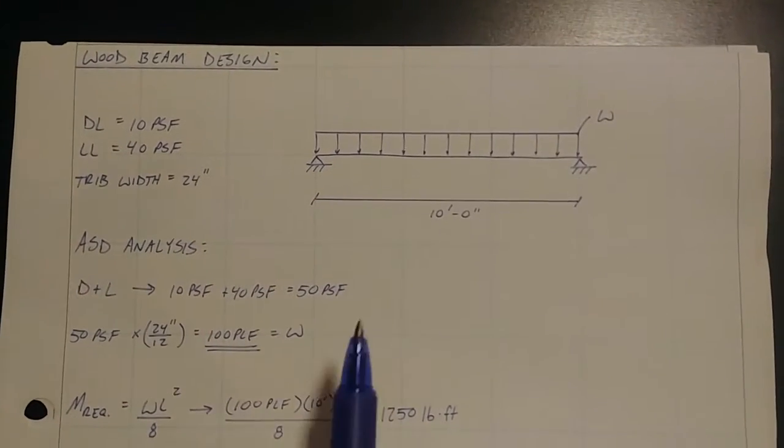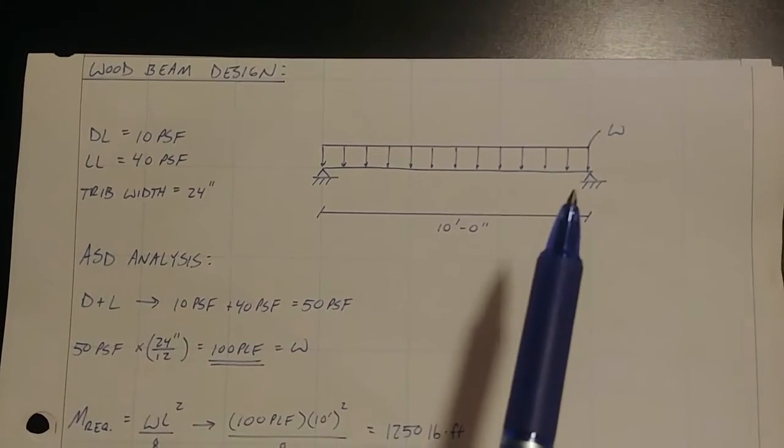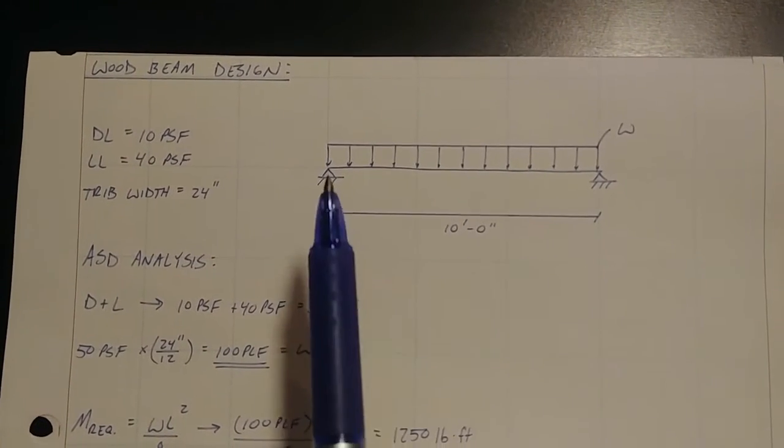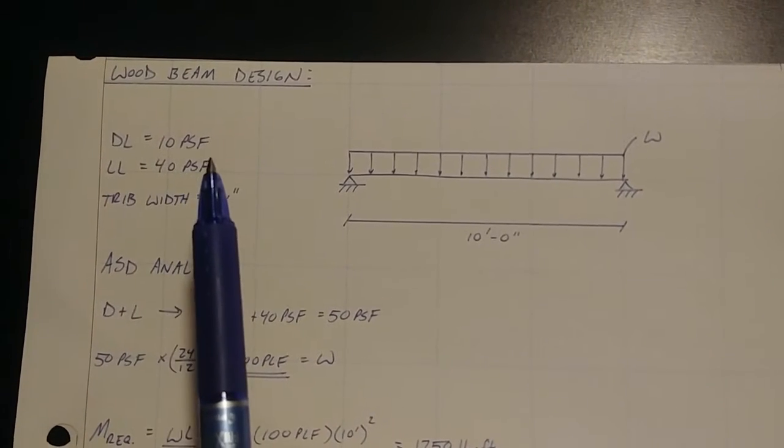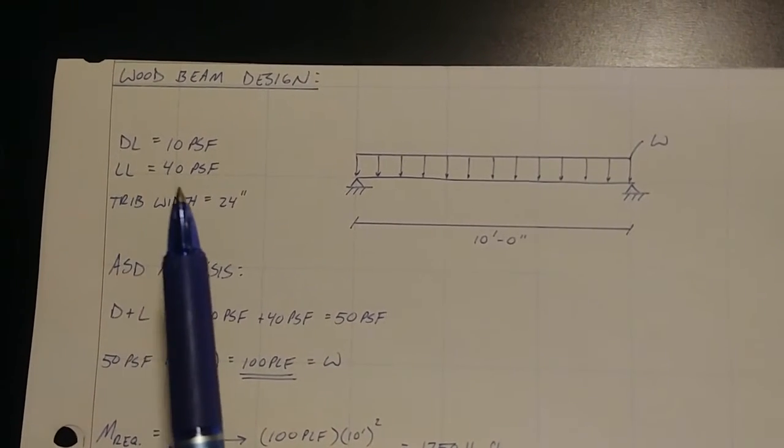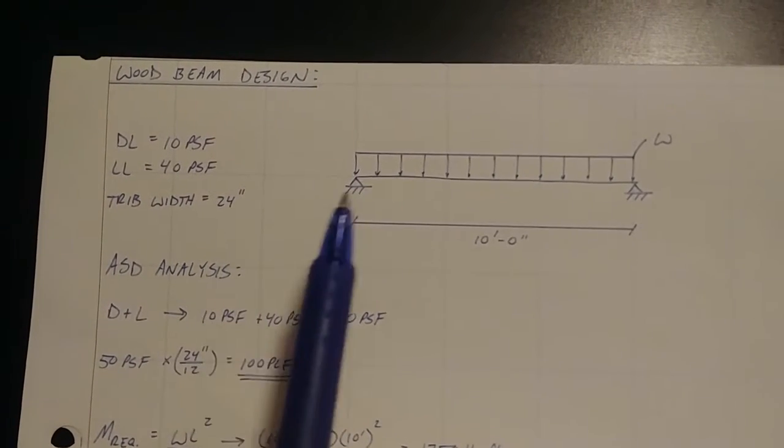So as you can see, we have a span of 10 feet. We have a uniformly distributed load across that 10 foot span, pin connection on both sides. We have a dead load of 10 PSF and a live load of 40 PSF. And we have a trip width of two feet, 24 inches.